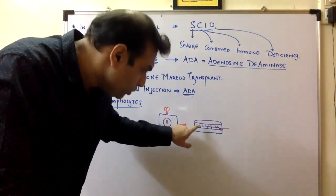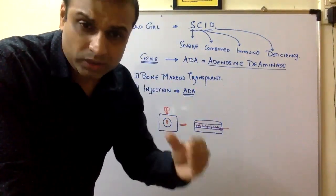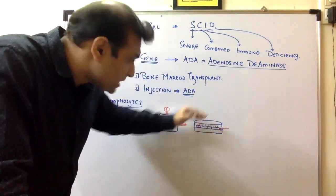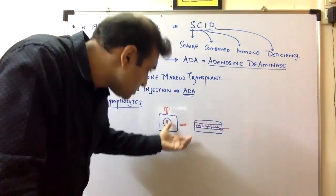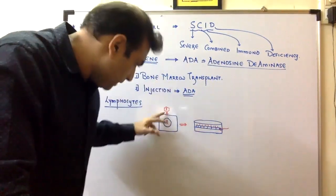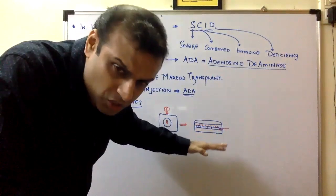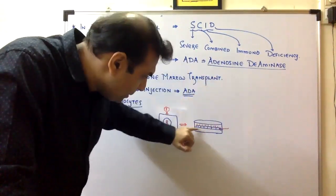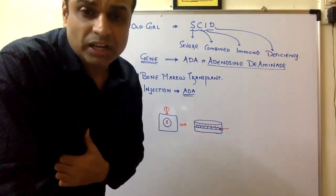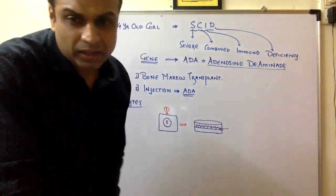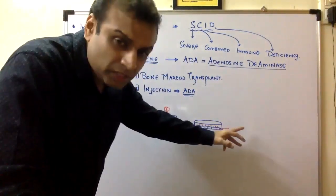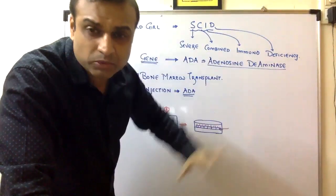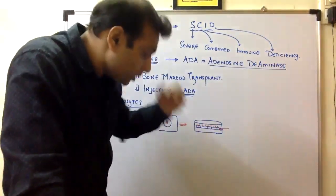However, lymphocytes have a limited lifespan — after some time they die. So periodic infusion of these gene-corrected lymphocytes was still required. This was the first step toward gene therapy: removing lymphocytes, culturing them, inserting the ADA gene via retrovirus, obtaining functional lymphocytes, and transferring them back. This child showed improved immunity compared to previous cases.